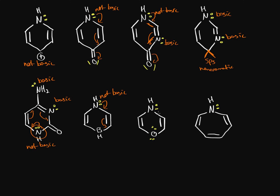What about this next one? If the oxygen and nitrogen are sp3 hybridized, we have four electrons in the structure. If we make them sp2 hybridized to contribute lone pairs, we end up with eight electrons in the ring — but that's still anti-aromatic by Hückel's rule. Whether sp3 or sp2 hybridized, both configurations make the ring anti-aromatic. So resonance stabilization is not preferred and the nitrogen is basic.